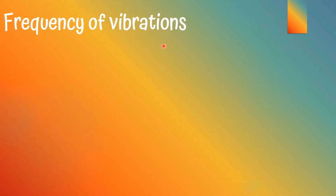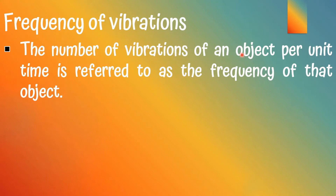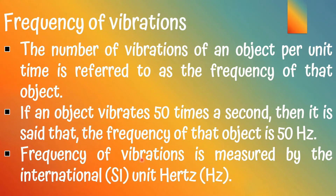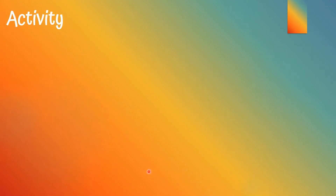The number of vibrations of an object per unit time is referred to as the frequency of that object. If an object vibrates 50 times a second, then the frequency of that object is 50 Hertz. Hertz is the international unit for measuring frequency of vibration.